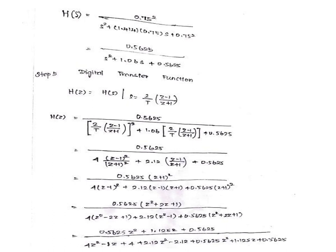Step 5: Digital transfer function. Where s is replaced by (2/T)(z-1)/(z+1). H(s) = 0.5625 / [(2/T)(z-1)/(z+1)]² + 1.06(2/T)(z-1)/(z+1) + 0.5625. By applying the values, we finally get 0.5625(z² + 1.125z + 0.5625) divided by (1/4)(z² - 2z + 1) + 1.06z - 1.06 + 0.5625z² + 1.125z + 0.5625 as the final H(z) value.